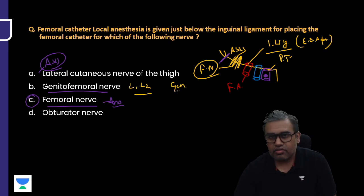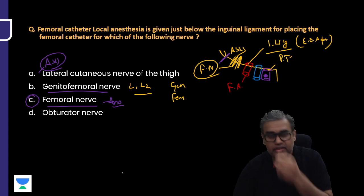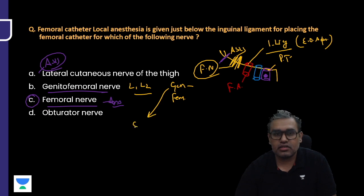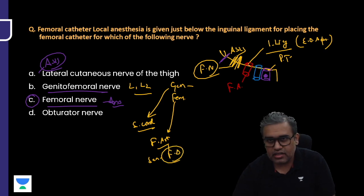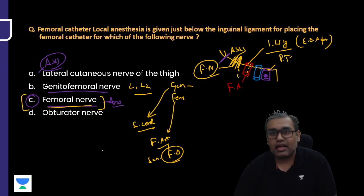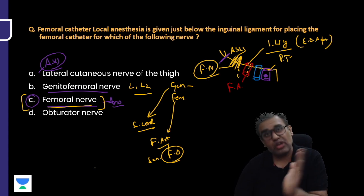While doing femoral catheterization, the nerve block if at all given should be femoral nerve. If that is an option, yes that would suffice. Other options: Lateral cutaneous nerve of thigh is more lateral close to the ASIS, so we can rule it out. Option B is also interesting: Genitofemoral nerve, root value L1 L2, divides into a genital branch and a femoral branch. The genital branch enters the spermatic cord, supplying the cremaster muscle. Femoral branch of genitofemoral enters along with the femoral artery and is sensory to the cutaneous area of the femoral triangle.